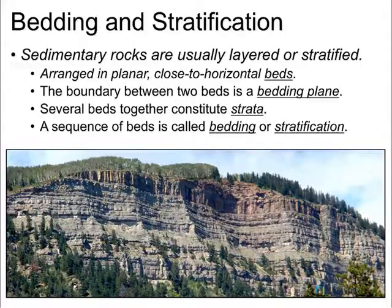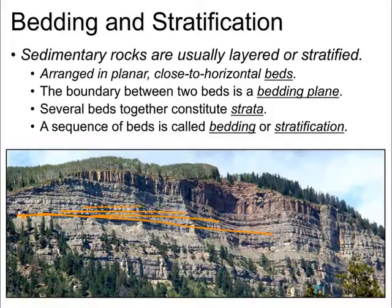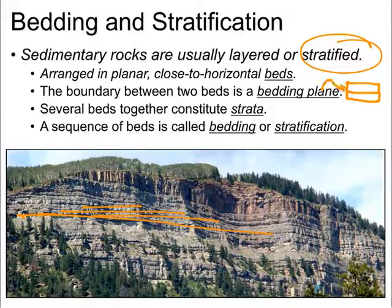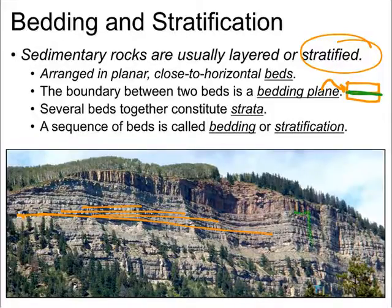Our sedimentary rocks tend to be layered. If you take a look here, it's very easy to see — one layer stacked on top of another, on top of another. We call that stratification, or we say they're stratified. Where two beds touch each other, the boundary between them is called a bedding plane. A bunch of beds together we might call strata.